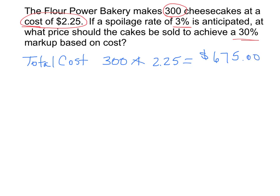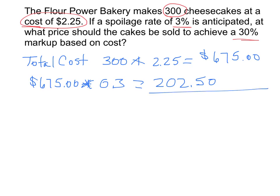Next we want to mark this up. So we would take $675 and mark up by 30%, so times 0.3, which is my 30%. $675 times 0.3 gives $202.50. We add those two values together and you should get $877.50. So that's your markup.